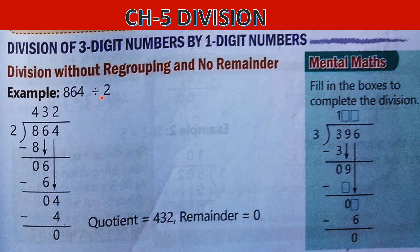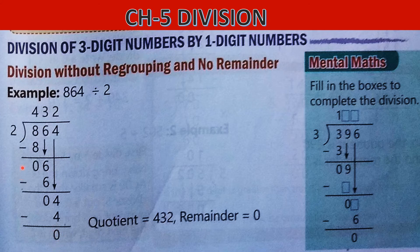See here: 864 divided by 2. First we make the division symbol, write the dividend inside and the divisor outside. In the table of 2: 2×4=8, so 8 minus 8 is 0. Then bring down 6; 2×3=6. Then bring down 4. See here — no remainder and no regrouping.